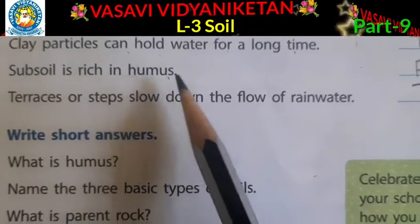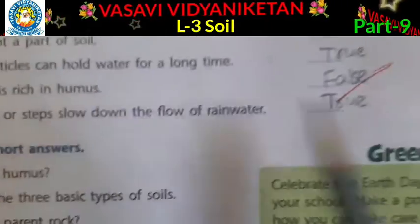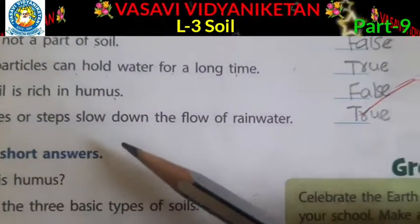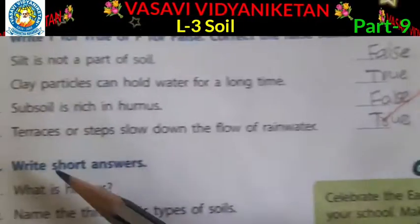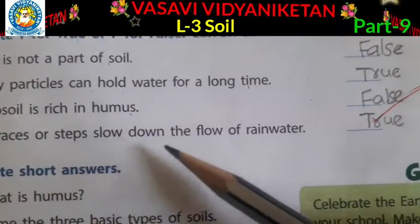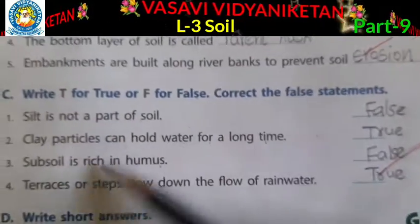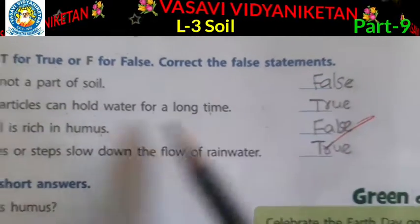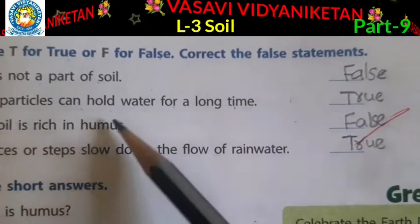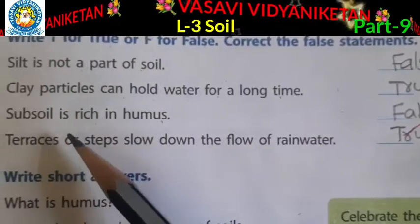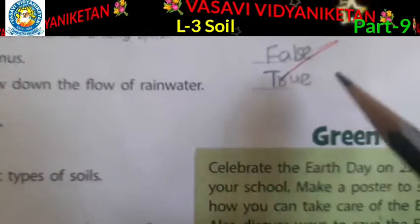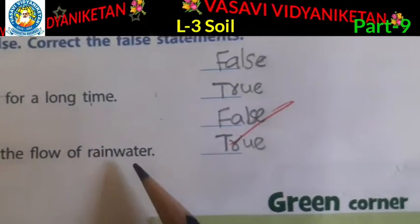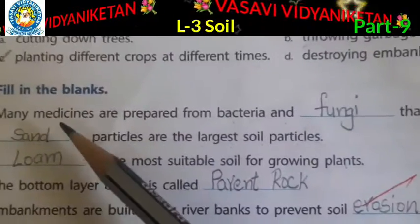Third one: Subsoil is rich in humus — False. F-A-L-S-E. Fourth one: Terraces or steps slow down the flow of rainwater — this was first marked False, then corrected to True. Terraces or steps slow down the flow of rainwater — True.